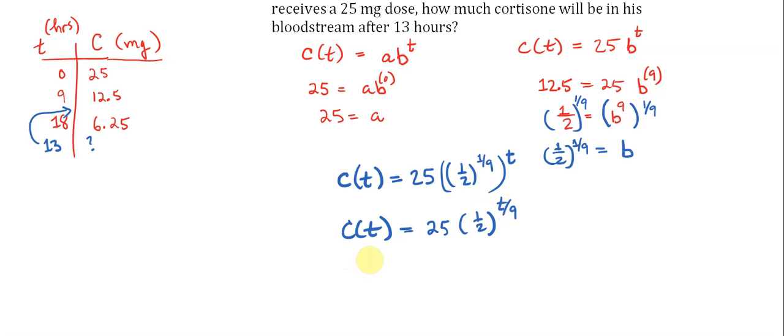Once we have this equation set up, the rest of this work is fairly simple. How much cortisone will be in the bloodstream after 13 hours? Well, we just plug in 13. So C(13) is going to be 25 times one half raised to the thirteenth over ninth, and use our calculator and we get approximately 9.186 milligrams.